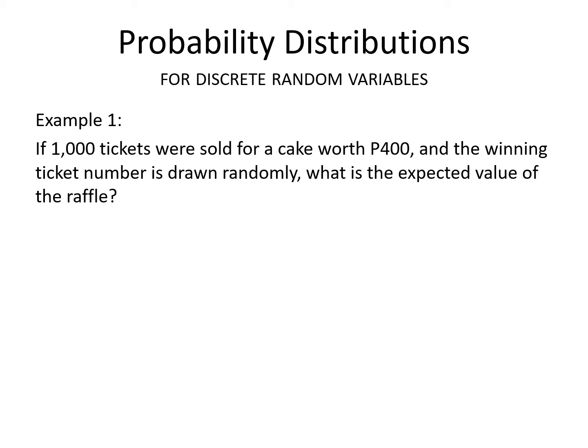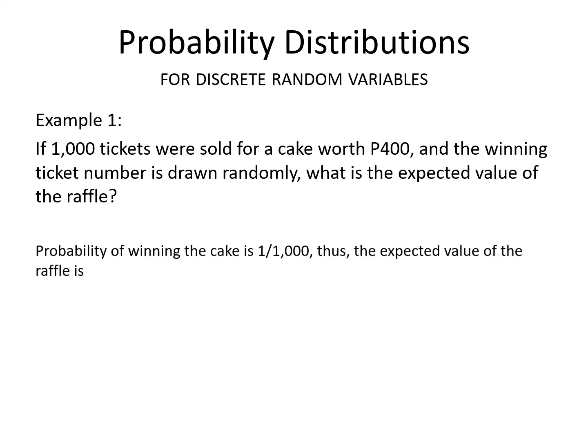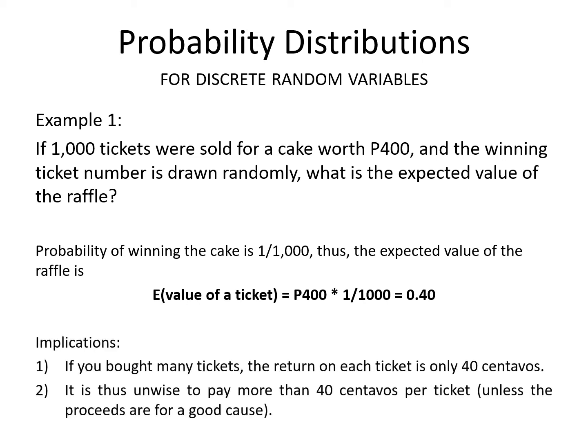Now let's look at this example, where 1,000 tickets were sold for a cake worth 400 pesos, and the winning ticket number is drawn randomly. The question is: what is the expected value of the raffle? The probability of winning the cake is 1 in 1,000. Thus, the expected value of the ticket equals 400 times 1/1,000, which equals 0.4. This means that if you bought many tickets, the return on each ticket would only be 0.40 pesos, so it would be unwise to pay more than 40 centavos per ticket — unless, of course, the proceeds are for a good cause.